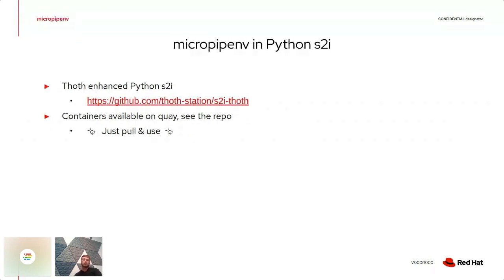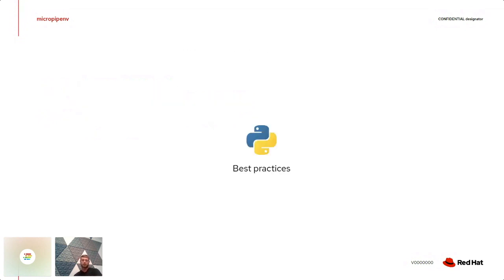Another way to try micro pipenv is to use Thoth-enhanced Python S2I container images. These are container images enhanced by the Thoth team with micro pipenv pre-installed, so you don't need to set any environment variable. You can also find UBI8 Python 3.6 and Python 3.8 container images running on UBI8. Feel free to pull these images and use containers with micro pipenv shipped.